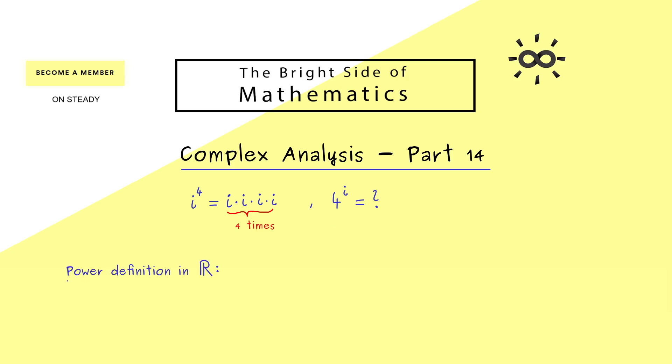So how do we define a general power with real numbers? For this, the base a should be positive. Then for the exponent, maybe we first start with a rational number - given by a fraction with two integers m divided by n. And of course, at least for n we should exclude 0.